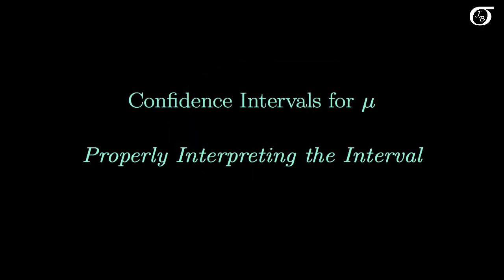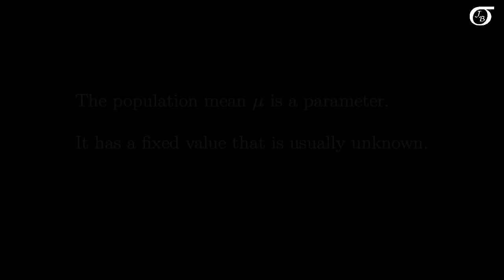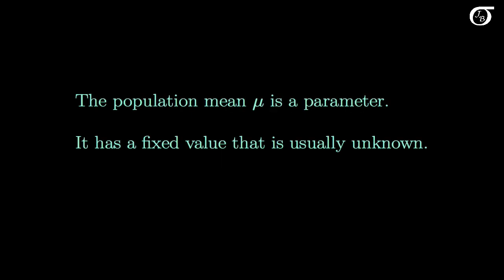Let's look at properly interpreting a confidence interval for the population mean mu. The population mean mu is a parameter. It has a fixed value that is usually unknown, and we often wish to estimate mu with a confidence interval.